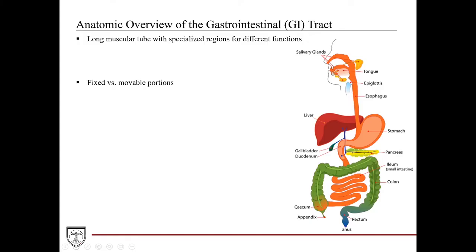The GI tract has portions that are fairly well fixed to the body versus portions that are fairly movable. Things like our oral cavity and the anus are fairly well fixed to the body wall, so the entryway and exit positions don't change much. Whereas the stomach and the small and portions of the large intestine are actually quite movable within our abdominal cavity, though they're all still anchored to the back body wall by sheets of mesenteries or connective tissues, which also aids their function of mixing food and moving things along.